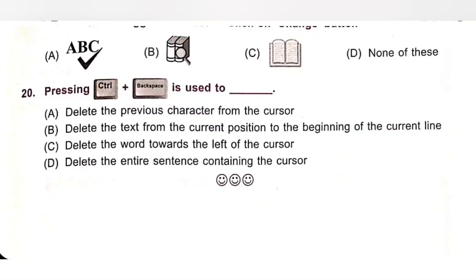Question 20: Pressing Ctrl plus Backspace is used to — A. Delete the previous character from the cursor. B. Delete the text from the current position to the beginning of the current line. C. Delete the word towards the left of the cursor. D. Delete the entire sentence containing the cursor. Pressing Ctrl plus Backspace is used to delete the word towards the left of the cursor. Option C is the correct answer.